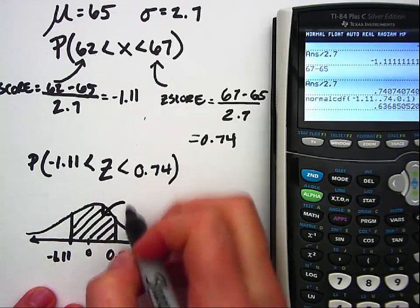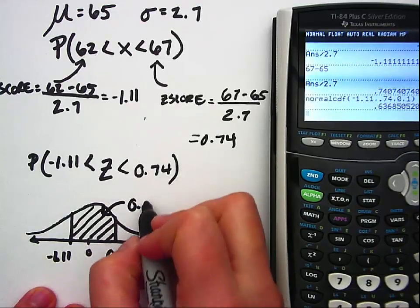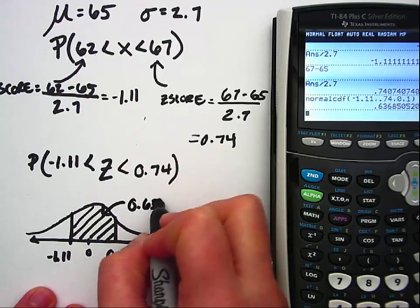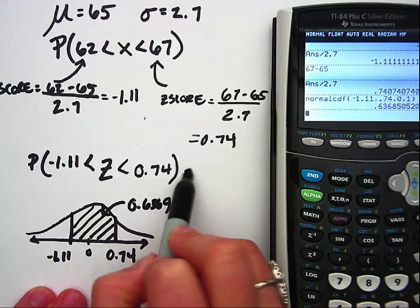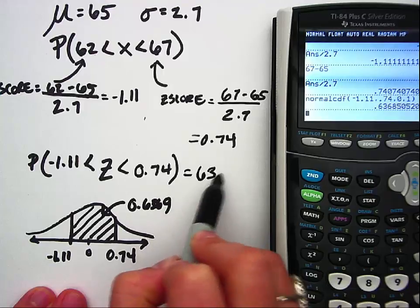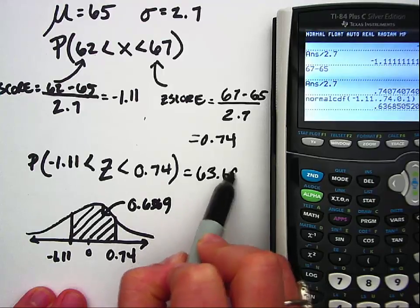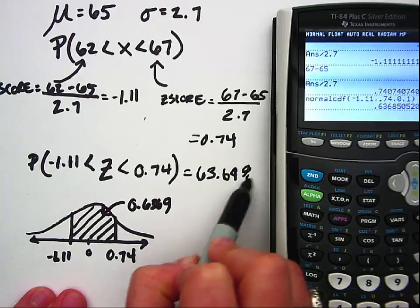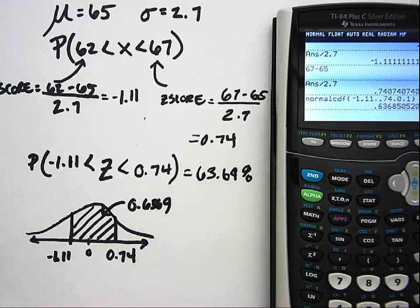Or essentially our probability of somebody having a height between 62 and 67 inches is 63.69 percent.